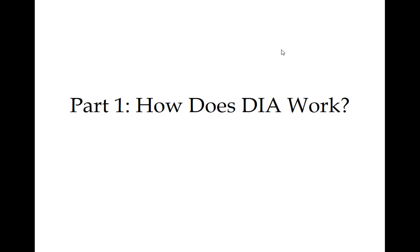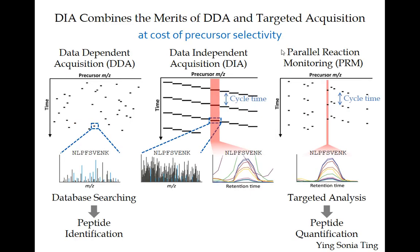Tomorrow we're going to talk about actually putting together instrument methods for DIA. For now, we're going to start with the basic fundamentals. One way to think about DIA is to see it in the context of more familiar methods. On the left here is a framework of data-dependent acquisition, and over here is parallel reaction monitoring, and DIA is kind of in-between.